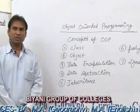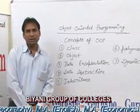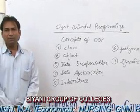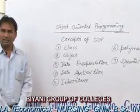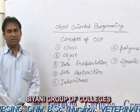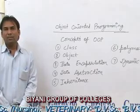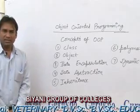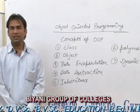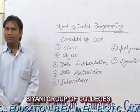Data abstraction is a process to know the essential features without knowing the internal features. Next is inheritance. Inheritance is a process of deriving a new class from an existing class. The new class is known as the derived class, child class, or subclass. And the existing class is known as parent class, superclass, or base class. The characteristics of the base class are inherited in the derived class, and we can also add additional features to the derived class.